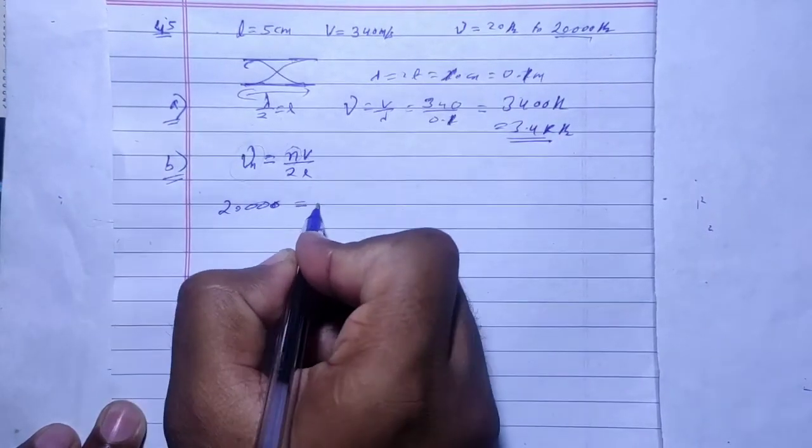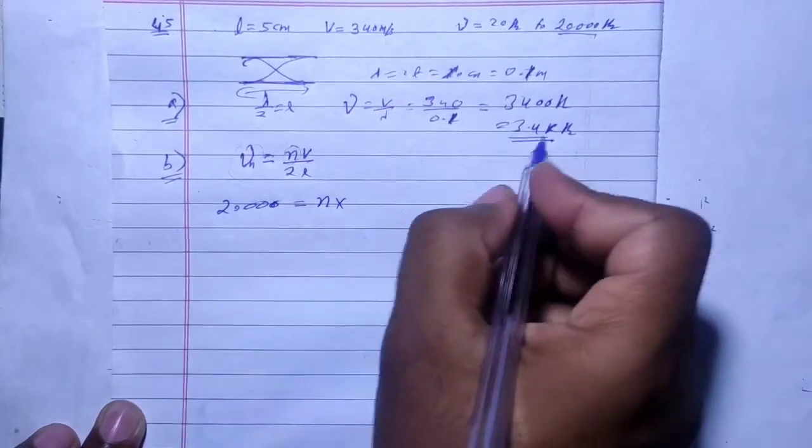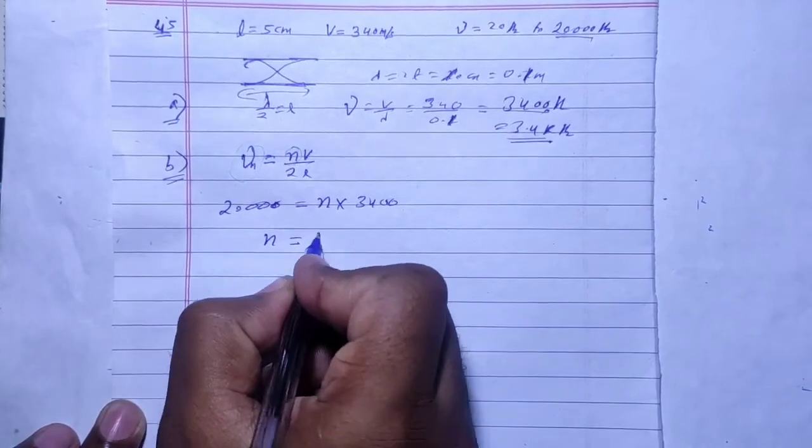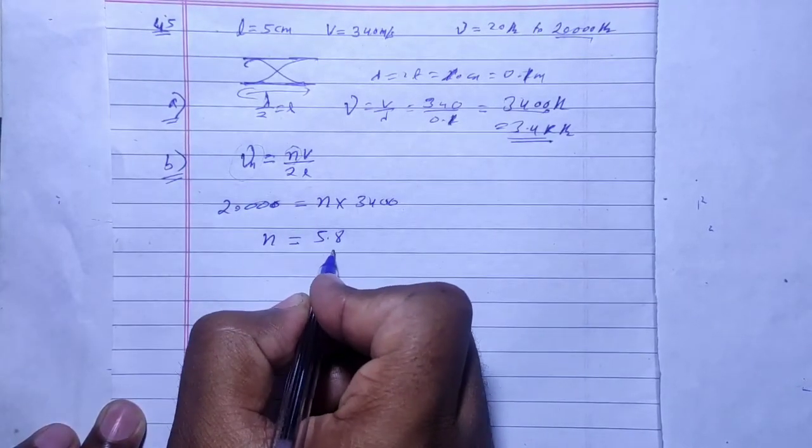So 20,000 equals n times v by 2L. We already found v by 2L equals 3400. Therefore n equals 20,000 divided by 3400, which gives 5.88.